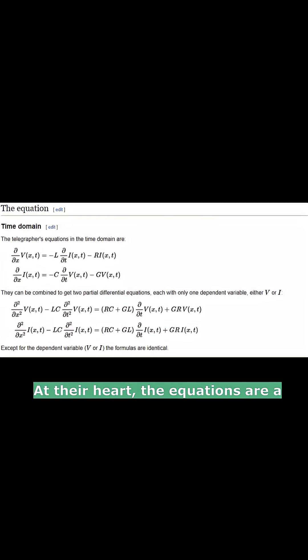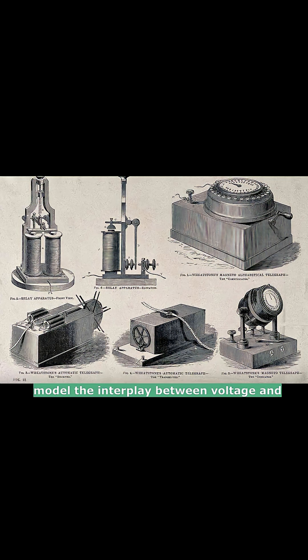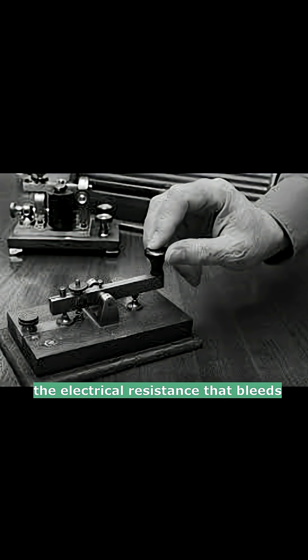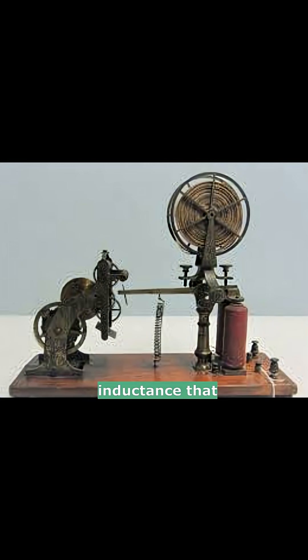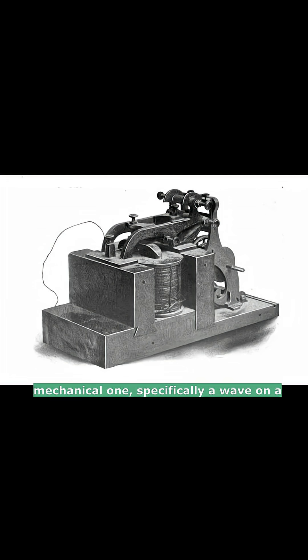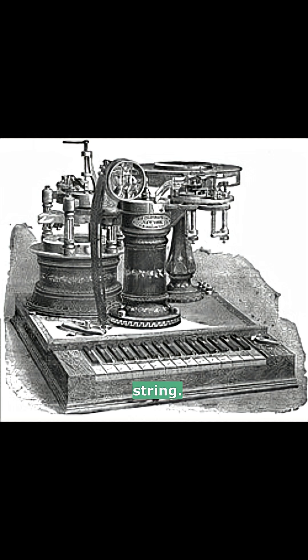At their heart, the equations are a coupled set of differential equations that beautifully model the interplay between voltage and current along a transmission line. They account for the real-world imperfections early telegraph engineers battled: the electrical resistance that bleeds energy as heat, and the capacitance and inductance that smear a sharp pulse into a faded, indistinct blob. The revolutionary insight was recognizing that this electrical system behaves like a mechanical one — specifically, a wave on a string.